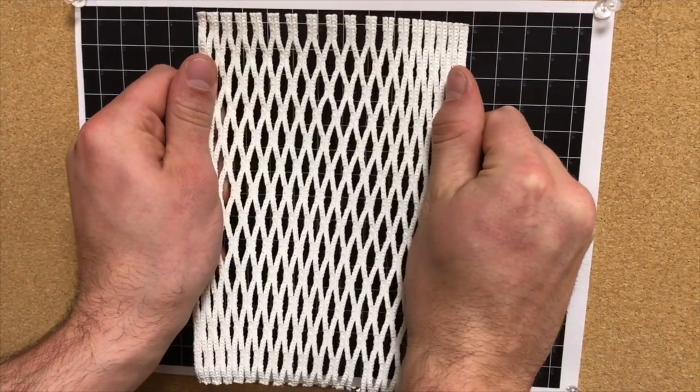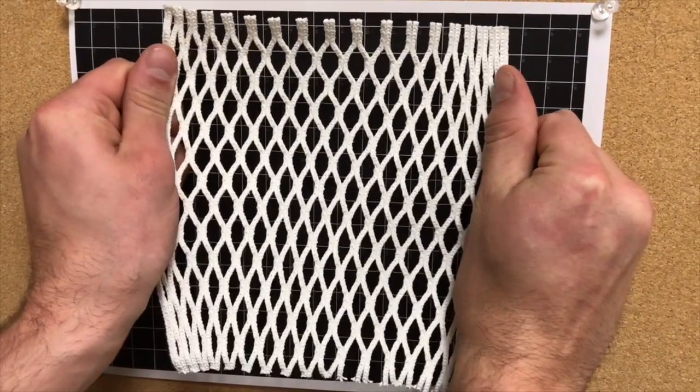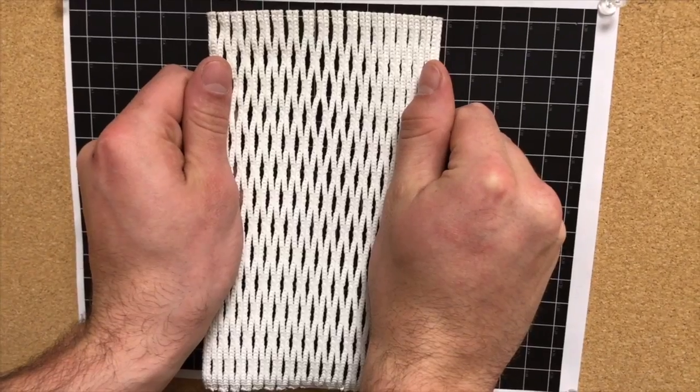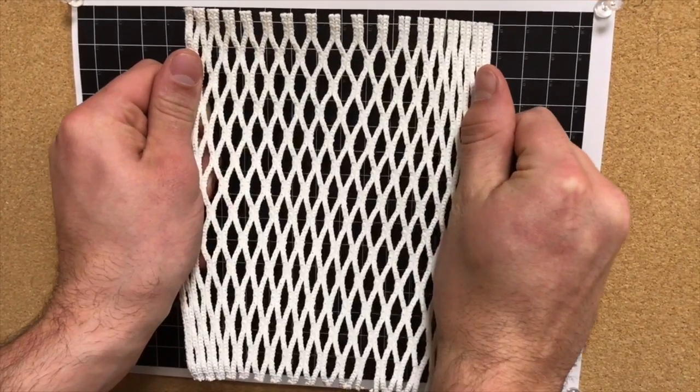Lacrosse strings can be used as an example of zero Poisson's Ratio material. When the material is pulled axially, it stays the same length in the lateral dimension. This is not a perfectly zero Poisson's Ratio, but it is pretty close.